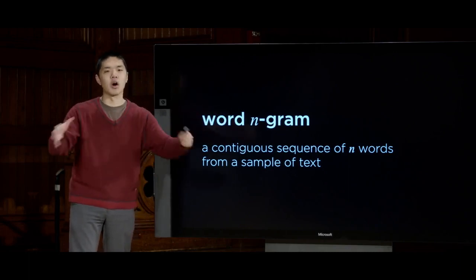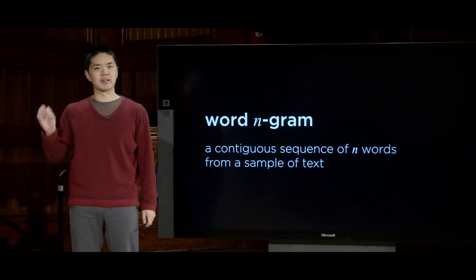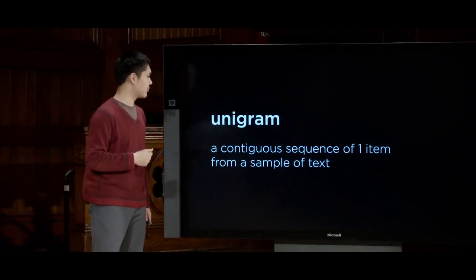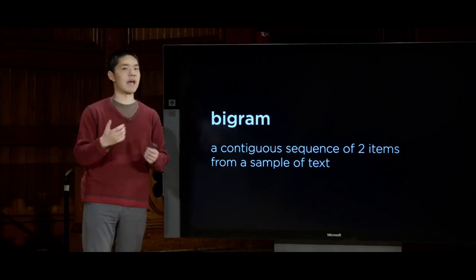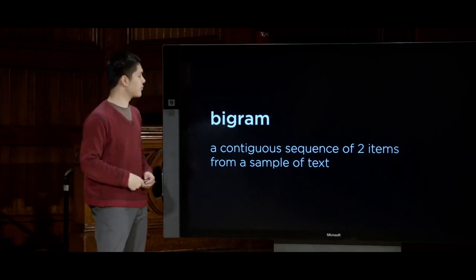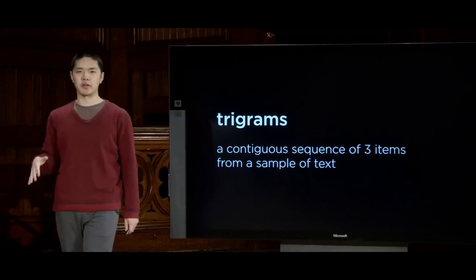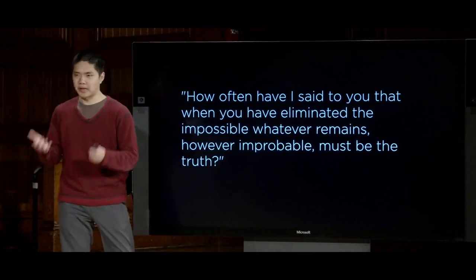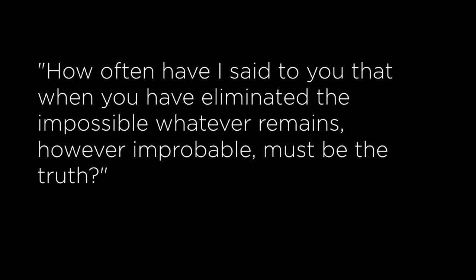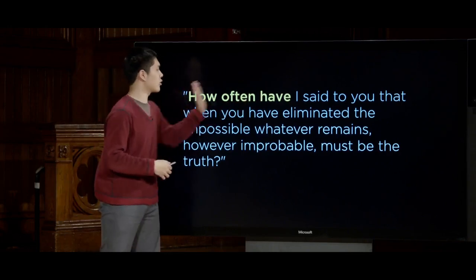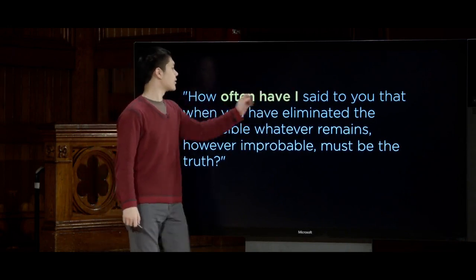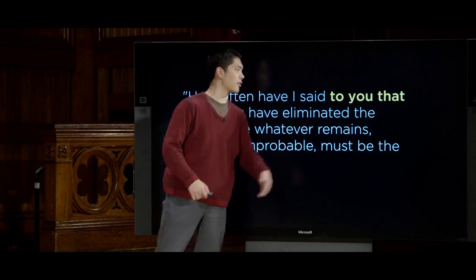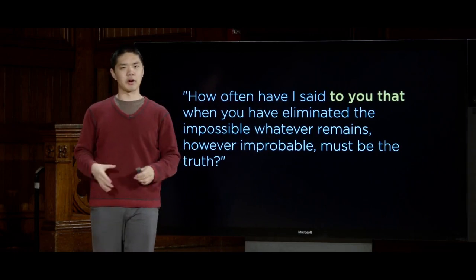To deal with that, we introduce the notion of an n-gram — a sequence of n items inside our text. Those items might be character n-grams, a contiguous sequence of n characters, or word n-grams, a contiguous sequence of n words. When n is 1, we're looking at a single word, called a unigram. Two words in sequence is a bigram. Three items is a trigram. These end up proving quite useful for analysis, and you choose n to decide how long your sequence will be.